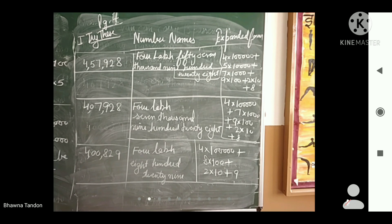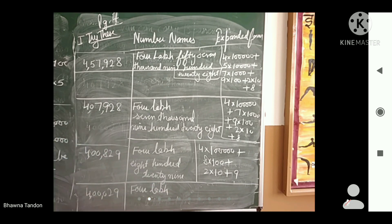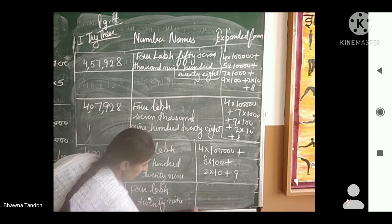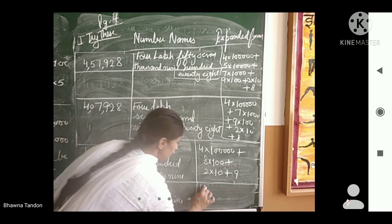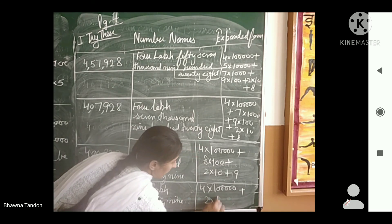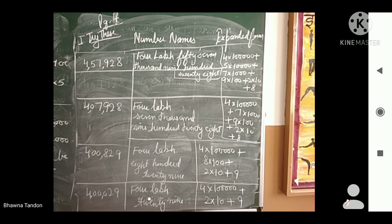The fourth number is 2,00,029. Its number name is two lakh twenty-nine. The expansion is 2 × 1 lakh + 2 × 10 + 9. These expanded forms and number names you are already practicing since Class 3, so you must be very familiar with these.